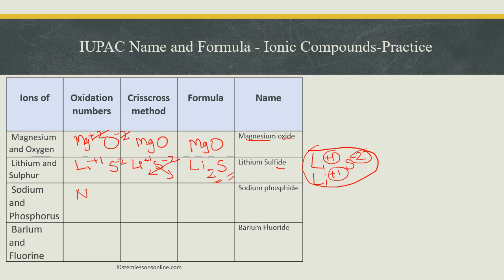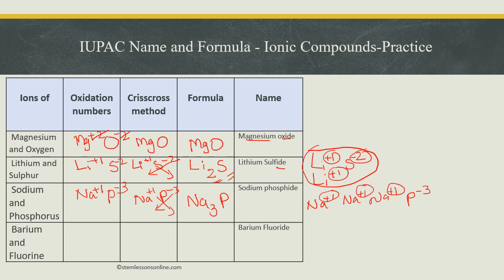The third one is sodium and phosphorus. Sodium is in the first group, so it is plus 1. And phosphorus is in the 15th group, so it is negative 3. When you criss-cross it, the 3 will go to sodium, and 1 we do not normally write. So the formula will be Na₃P, and the name will be sodium phosphide. To expand it: Na plus 1, Na plus 1, Na plus 1 neutralize the negative 3, so plus 1 plus 1 plus 1 equals plus 3, and negative 3 gives a total charge of 0.